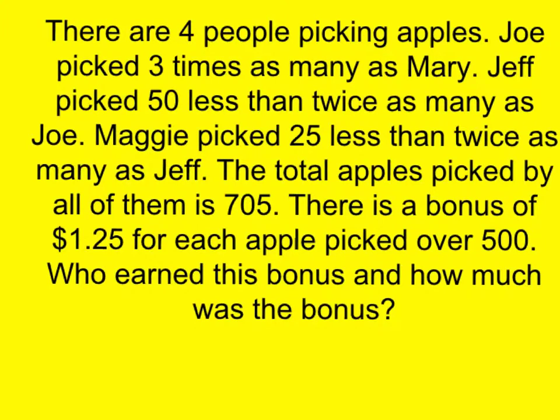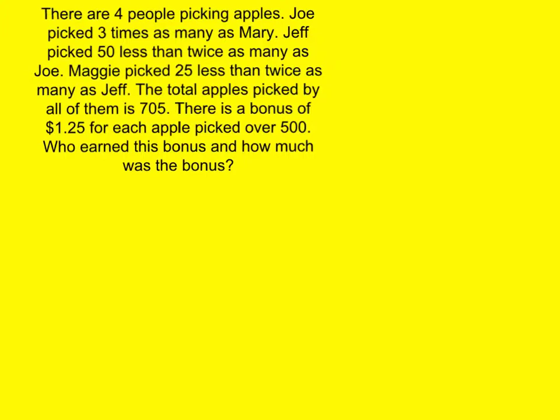There are four people picking apples. Joe picked three times as many as Mary. Jeff picked 50 less than twice as many as Joe. Maggie picked 25 less than twice as many as Jeff. The total apples picked by all of them is 705. There is a bonus of $1.25 for each apple picked over 500. Who earned this bonus and how much was the bonus? Four people picking apples. Joe picked three times as many as Mary. So here's Joe and Mary. Mary is going to be X and Joe is 3X.